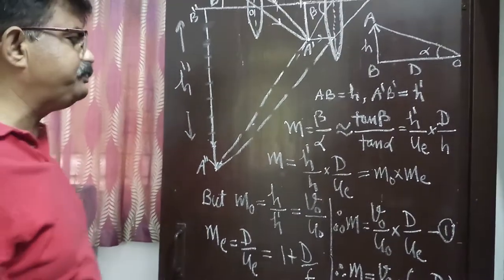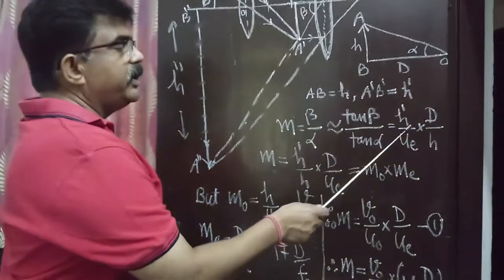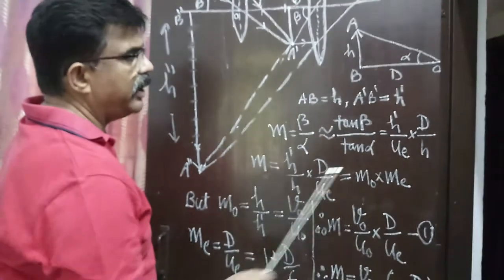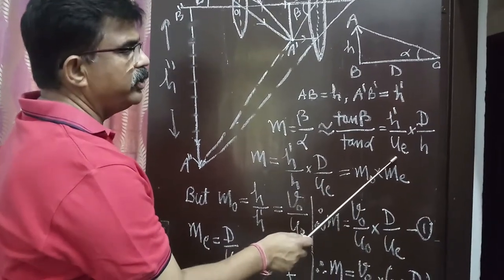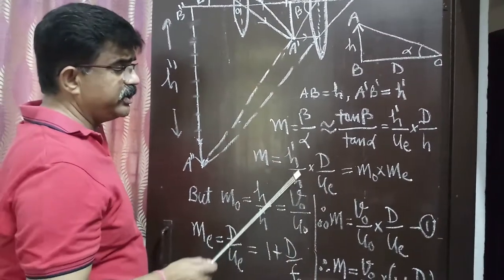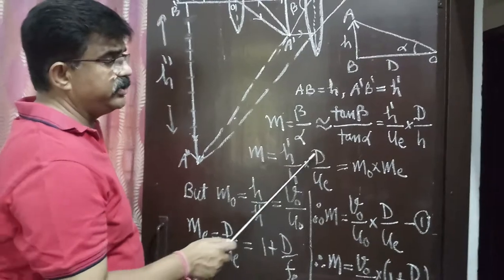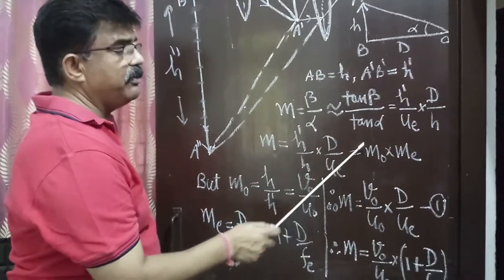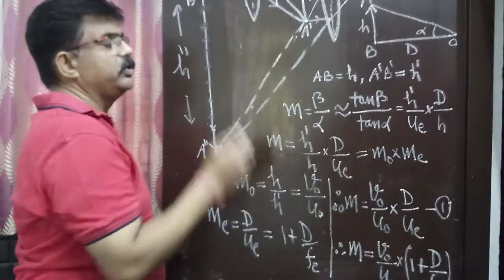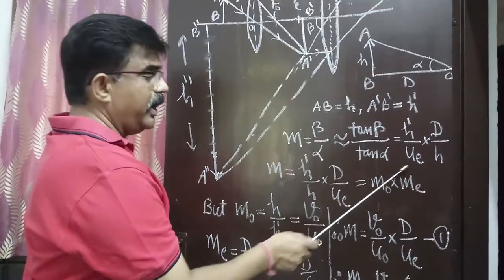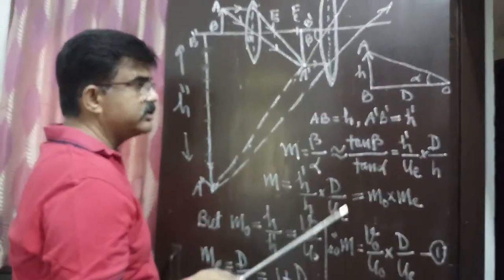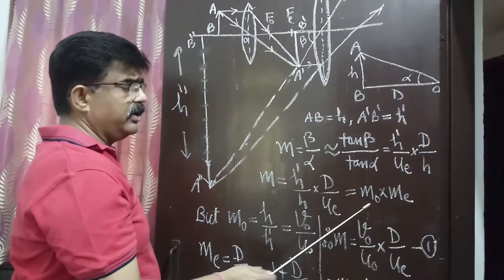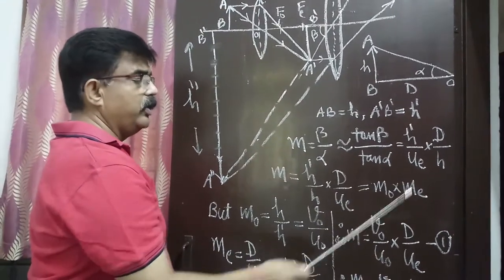We can rearrange this as M = (H'/H) × (D/UE). Here H'/H is the magnification of the objective lens, MO, and D/UE is the magnification of the eyepiece, ME. So we can write M = MO × ME.